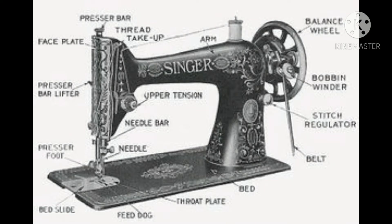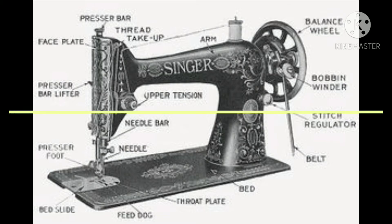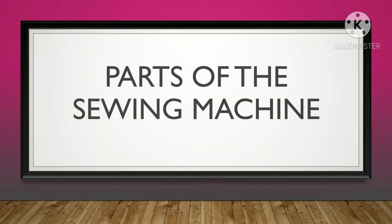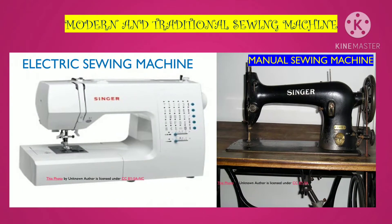Here is an example of the manual or traditional sewing machine. Let us observe, memorize, and identify the different parts of the sewing machine. The electric and the manual sewing machine are almost the same. We have two kinds of sewing machine: the manual sewing machine and the electric sewing machine.